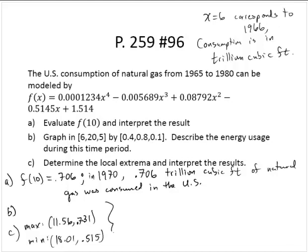So interpretations of that might be, all right, so 11.56. So that would be the year 1971, 1972. Let's just, since 0.56 is closer to 72, let's round up. So in 1972, consumption was at its maximum at 0.731 trillion cubic feet.